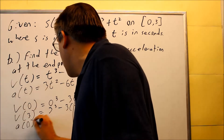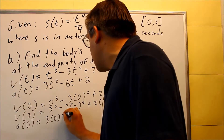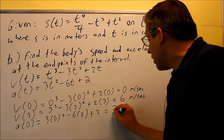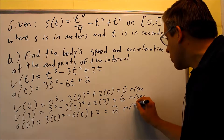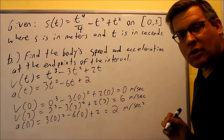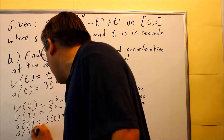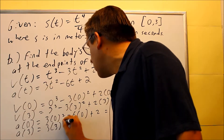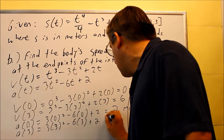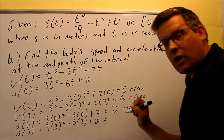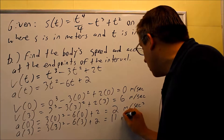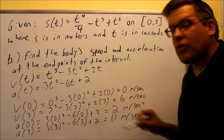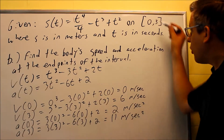Next, let's do acceleration. For a(0): three times zero squared minus six times zero plus two — the first two terms cancel out and we get two meters per second squared. The last one is a(3): we put three in for t and work that out to get 11 meters per second squared. So we've gotten the speed from the velocity functions and the acceleration values, evaluated at the endpoints.